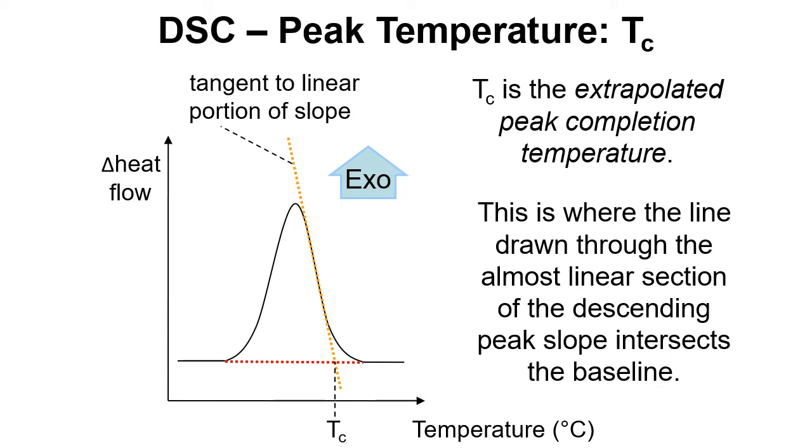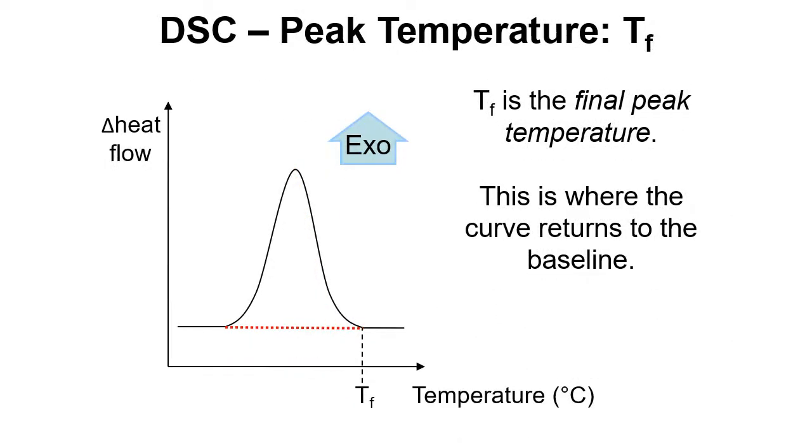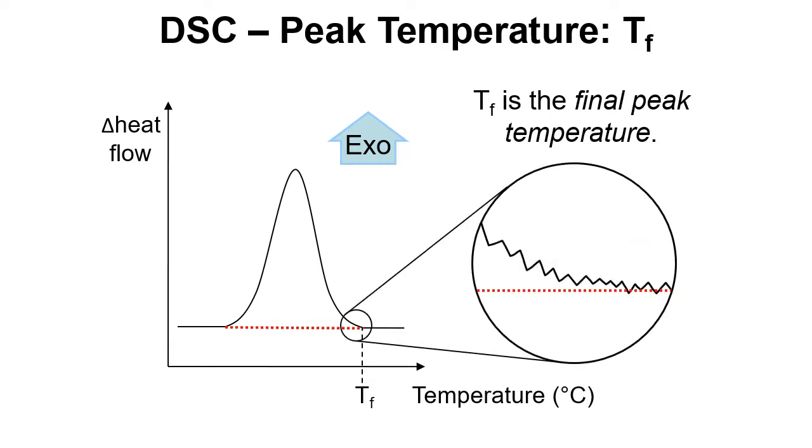Then we also have TC, the extrapolated peak completion temperature, and it's very similar to T subscript E. We draw a tangent through the steepest part here and we look at where that crosses the baseline. And finally we have TF, the final peak temperature where the curve returns to the baseline. Again we've still got these issues around this noise and how do we decide where the baseline goes? How do we decide when the curve has really returned to this? So it's perhaps a little bit less reliable. Perhaps we need to rely more on T subscript C for the completion temperature which is using the extrapolated values.